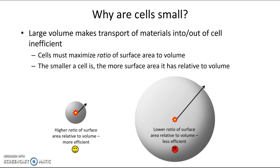Now that you know some basic information about cells, let's take a look at some of the specific features that are found in or on cells. In this video, we're just going to look at a few features that all cells have. Then over the next couple of weeks, you're going to learn much more about specialized features found only in specific types of cells.